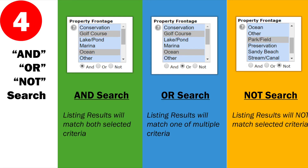Next, we'll talk about feature groups and feature items: AND, OR, and NOT. If you select AND, all of the conditions you've selected must be present in the search results — in this case, golf course and ocean, so every result must have both. The OR option means it's one or the other: golf course or ocean, so the listing has either a golf course or ocean in the results.